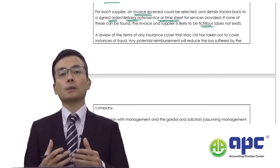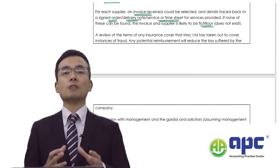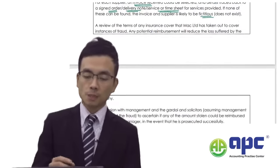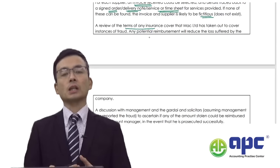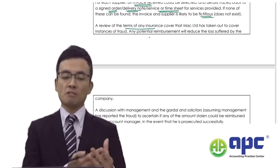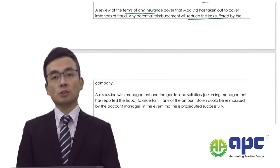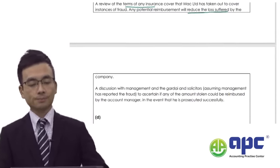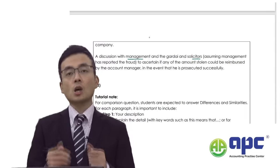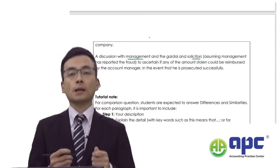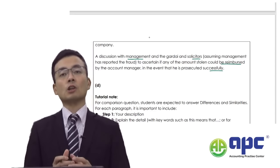If none of the source documents can be found, the supplier is likely fictitious. Also review the terms of insurance to confirm what reimbursements can be claimed back from the insurance company, which would reduce the amount of losses suffered. Additionally, discuss with management and solicitors whether the account manager will repay certain amounts to MACL - this would also reduce losses. For Part C with four marks, aim to score two out of four well-developed points.